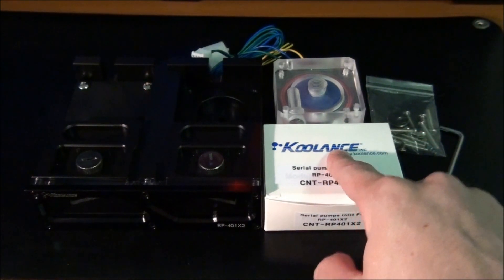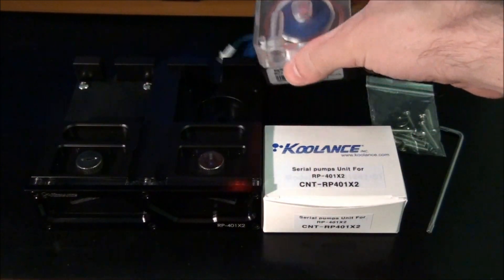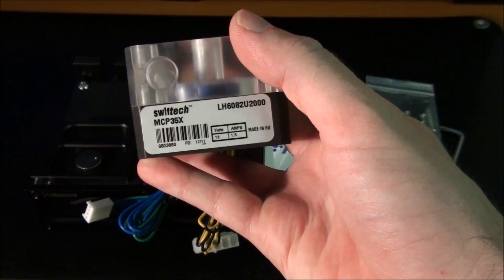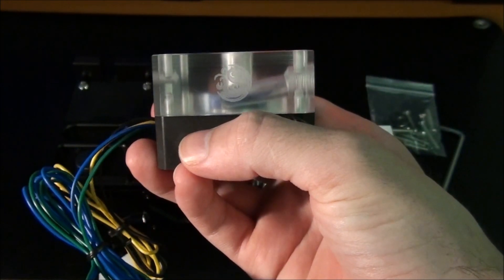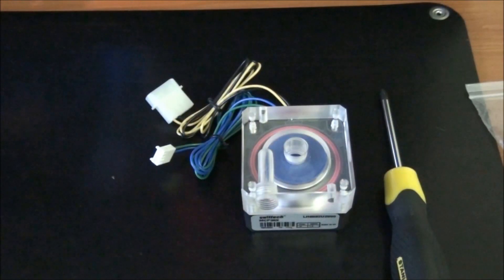Using this optional x-ray which you can purchase separately for this reservoir. The pump that I'm installing into it is the Swiftec MCP35X, and it actually already has a custom pump top installed onto it, a Bits Power pump top. The first thing that needs to be done is I need to remove the pump top from the pump. It doesn't matter whether it's a custom pump top like this one or if it's the stock pump top. It needs to be removed for the pump to be installed into this reservoir.